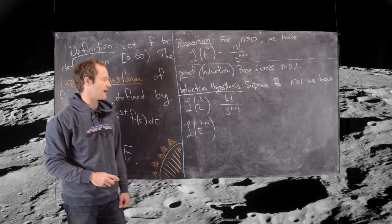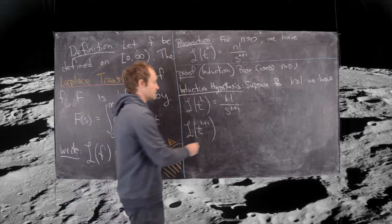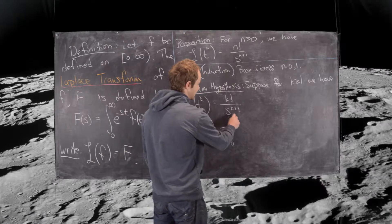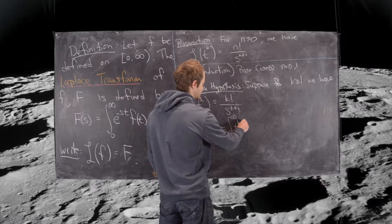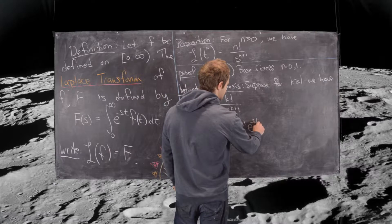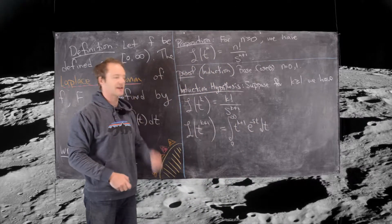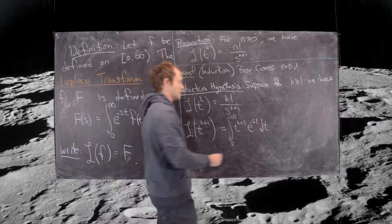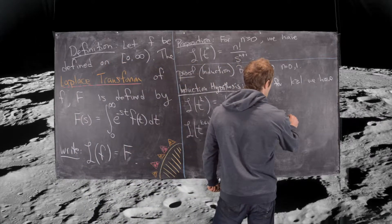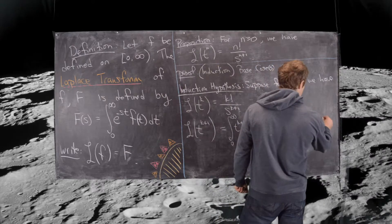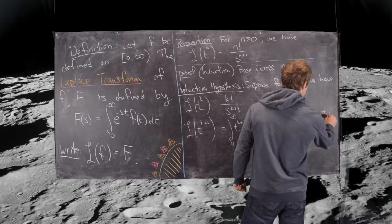And it will, and we'll do that by integration by parts as we'll see. This is equal to the integral from 0 to infinity of t to the k plus 1 times e to the minus st dt. Now we're going to attack this with one step of integration by parts. Let's let u equal t to the k plus 1, and then we'll let dv equal e to the minus st dt.